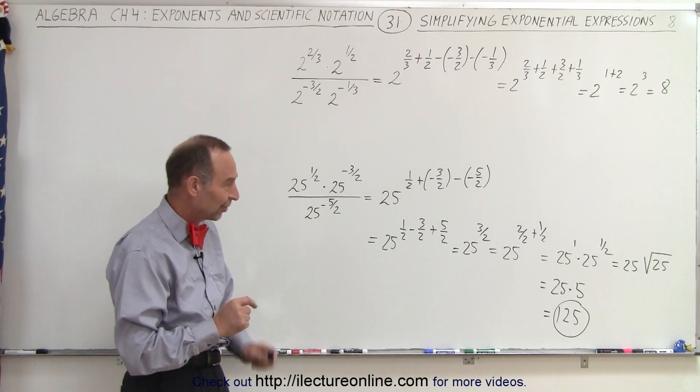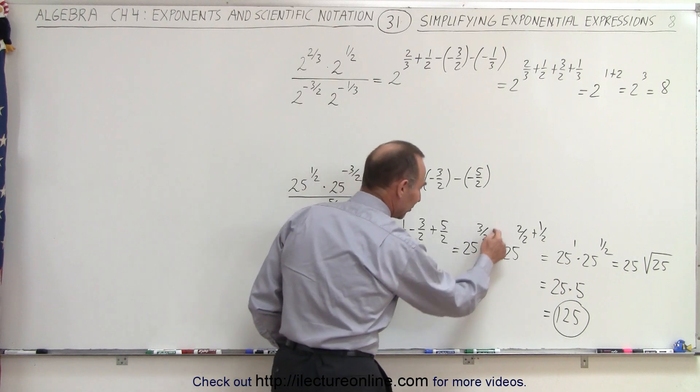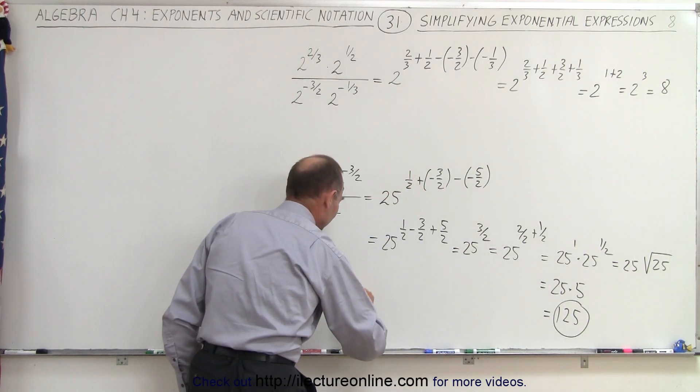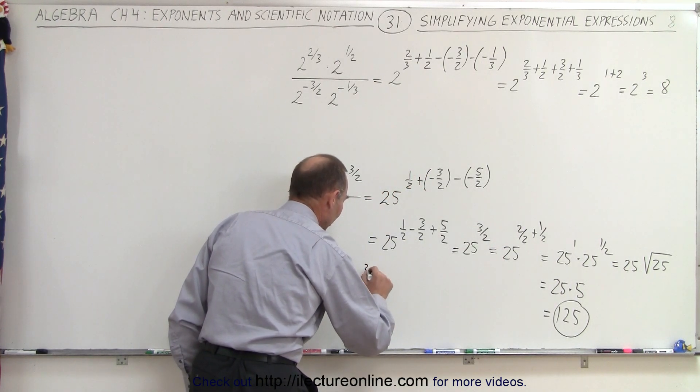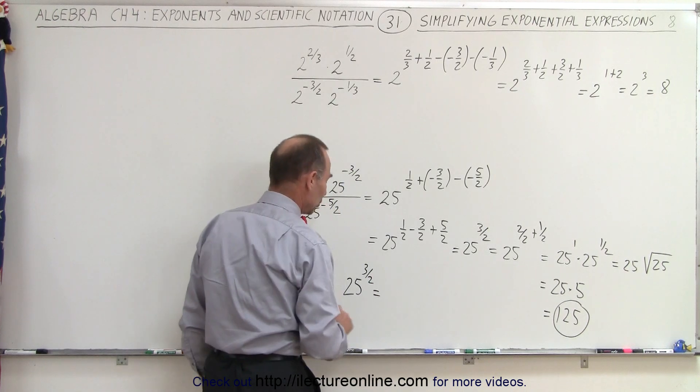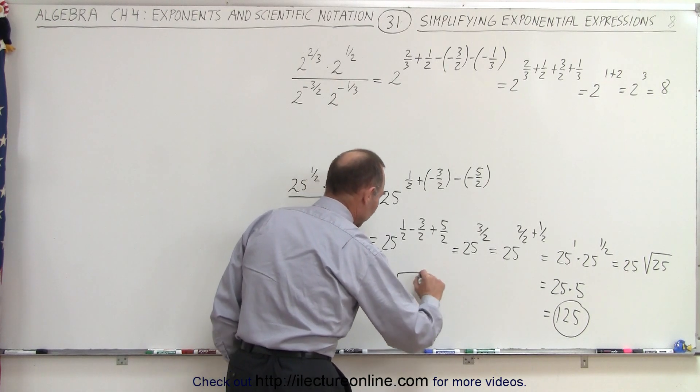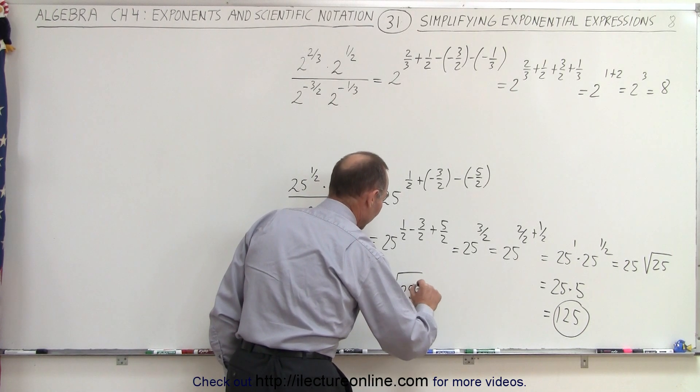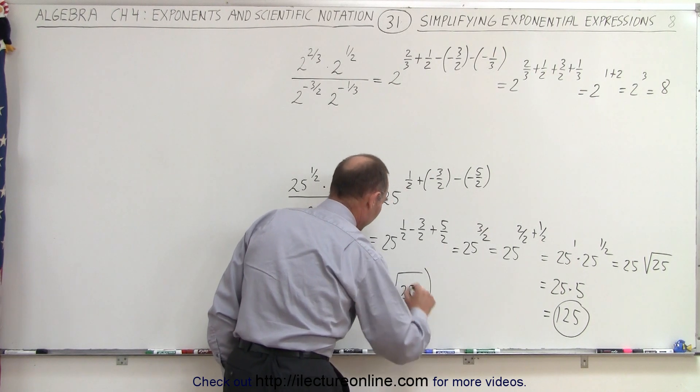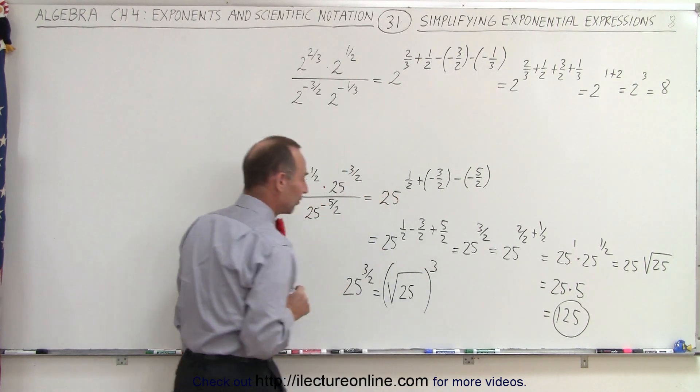And my wife just noticed that we can take this right here and think of it in a different way as well. 25 to the 3 halves power is equal to the square root of 25 to the 3rd power, like this.